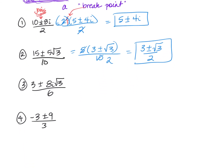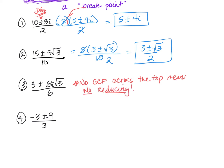Look at number 3: 3 plus or minus 8i squared root of 3, over 6. There is no GCF in the numerator here — I don't see anything I can factor out of both terms, so that means I really can't reduce. If there's no GCF across the top, it means no reducing. Don't be fooled: this 3 and this 6 do not reduce. You cannot mess with what's under the radicals. GCF across the top — if there's not one that works with the bottom, then you don't reduce.